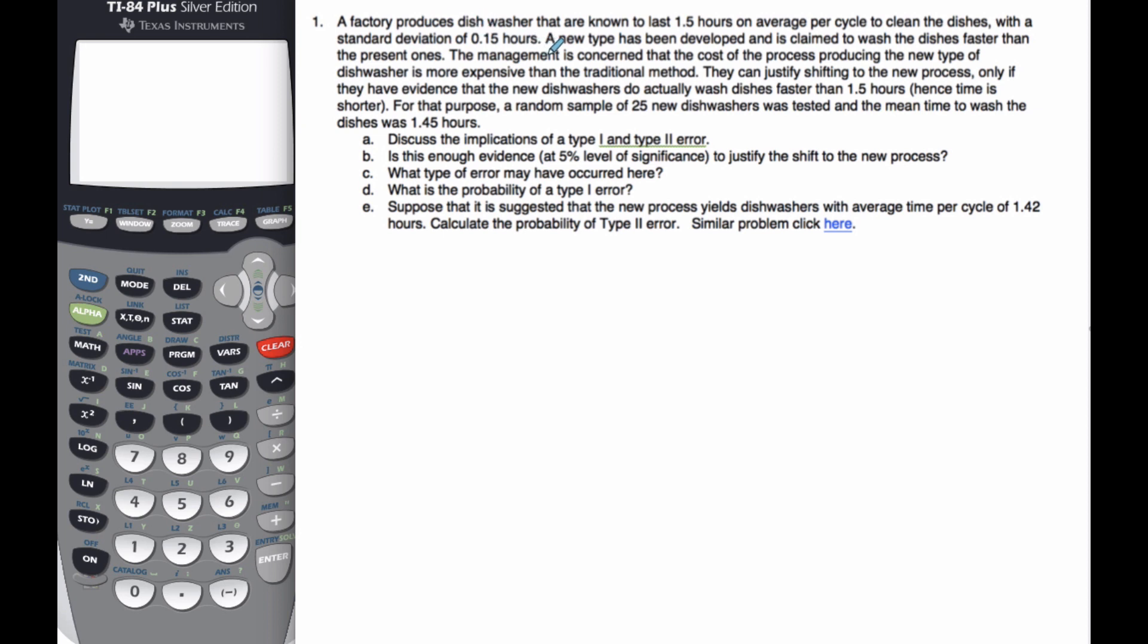A factory produces dishwashers that are known to last 1.5 hours on average per cycle to clean the dishes, with a standard deviation of 0.15. A new type has been developed and has claimed the wash dishes faster than the present one. The management is concerned that the cost of the process producing the new type of dishwashers is more expensive than the traditional method. They can justify shifting to the new process only if they have evidence that the new dishwashers do actually wash dishes faster than 1.5 hours. Hence, the time is shorter. So it's faster, the time is going to be shorter.